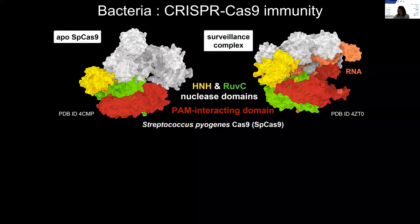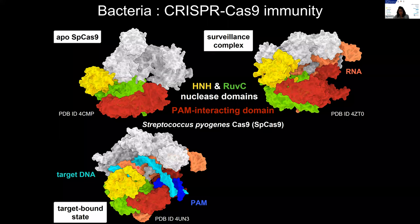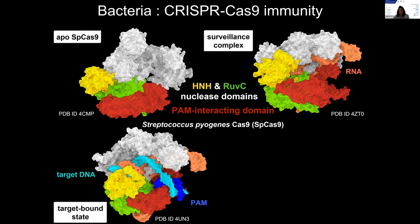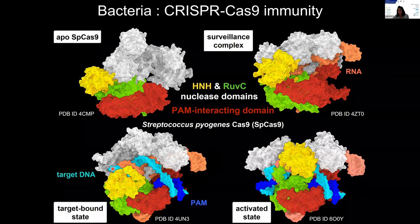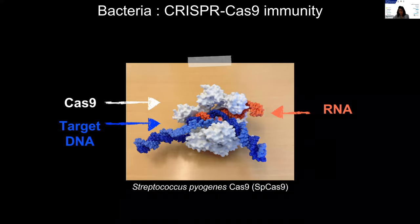PAM binding is the critical event that triggers a cascade of structural rearrangements that assist target binding. Target binding corresponds to the formation of an RNA-DNA heteroduplex. The formation of a complete DNA-RNA heteroduplex then induces the reorientation and activation of the nuclease domains, leading to the activated state of the surveillance complex. What has made CRISPR-Cas9 so famous worldwide is that with one protein, Cas9, and one RNA molecule that can be easily programmed to target virtually any sequence, you have a versatile tool for genome editing and manipulation.